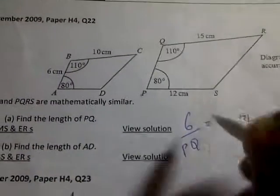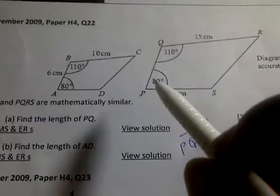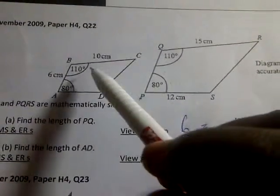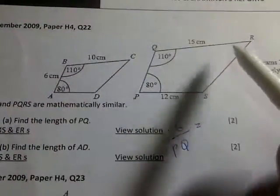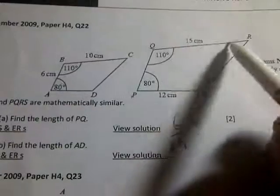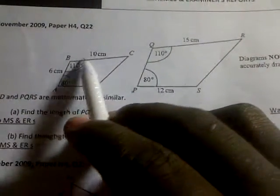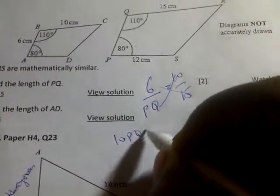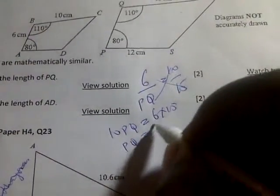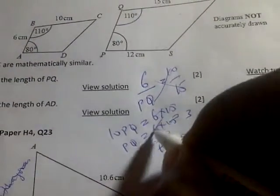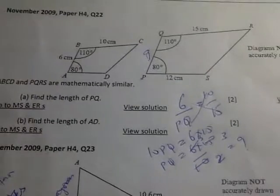Now let's find another side — a side given on this shape and a given side on the other shape that are corresponding. We have six over PQ equal to 10 over 15. Cross-multiplying, you have 10 PQ equal to 6 times 15, so PQ will be 6 times 15 divided by 10. Simplifying: 5 into 10 is 2, 5 into 15 is 3, giving us 9. So PQ is 9.